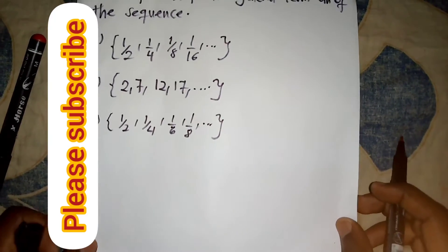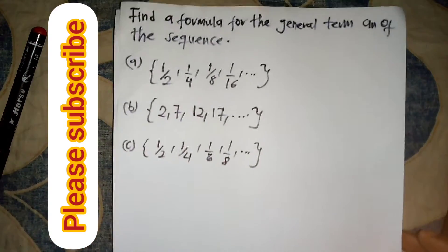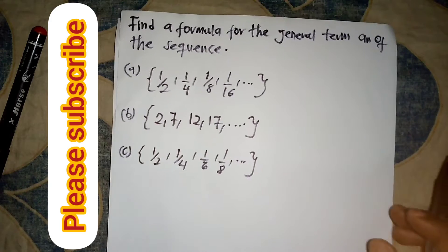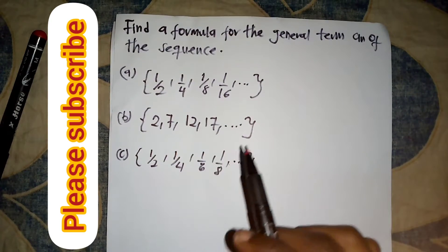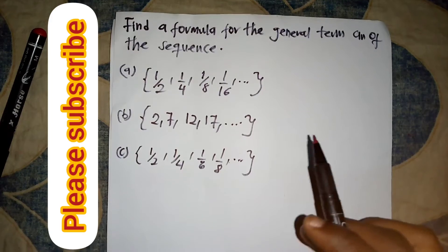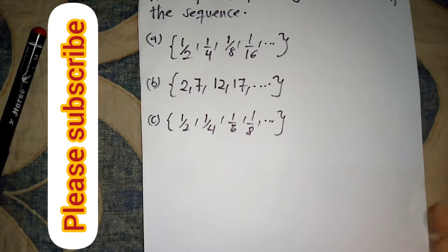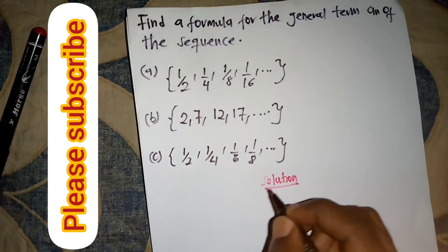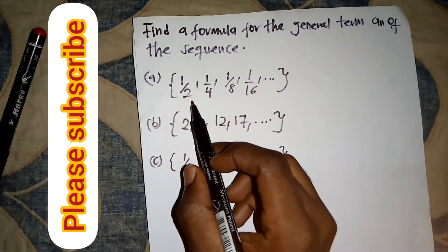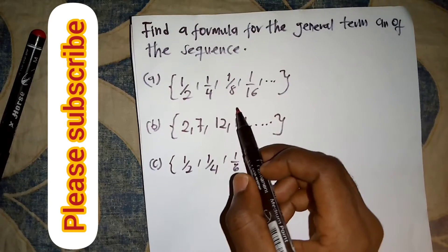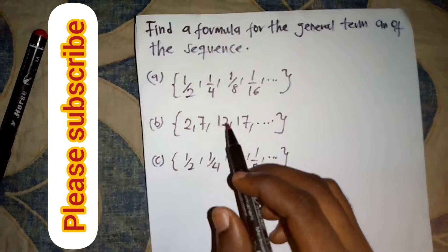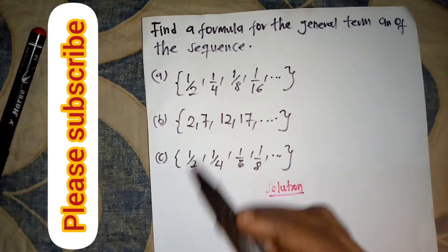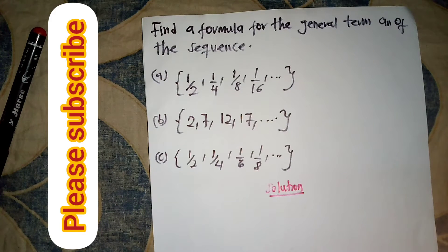Hello students, welcome once again to this channel. We have a question on series and sequences and we have to find a formula for the general term aₙ of the sequence. To find a general term for a sequence, you have to determine whether it is a linear sequence or a geometric sequence.